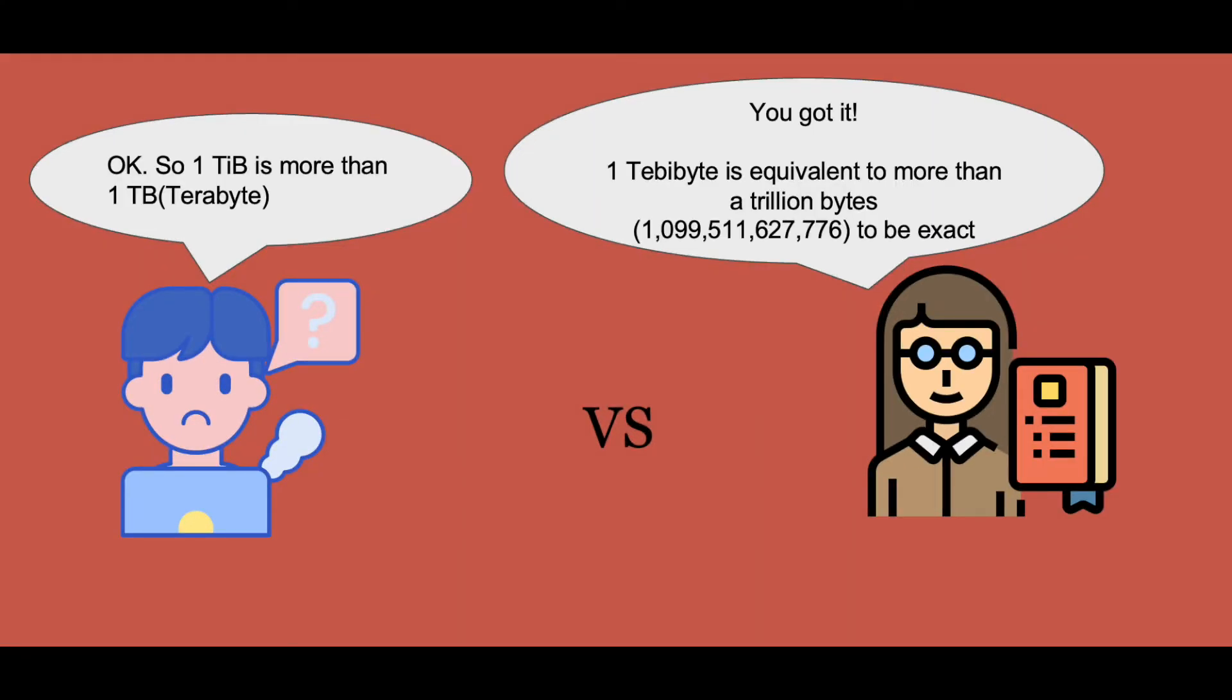Our amateur goes, okay so 1 TiB is more than 1 TB or terabyte, is that correct? The expert goes, yeah you got it. 1 tebibyte is equivalent to more than a trillion bytes, or 1,099,511,627,776 bytes to be exact.